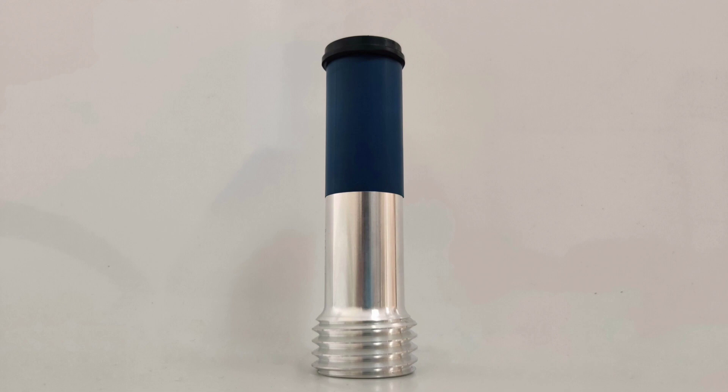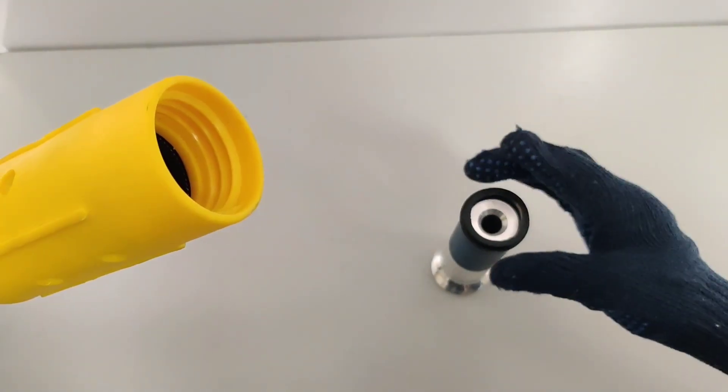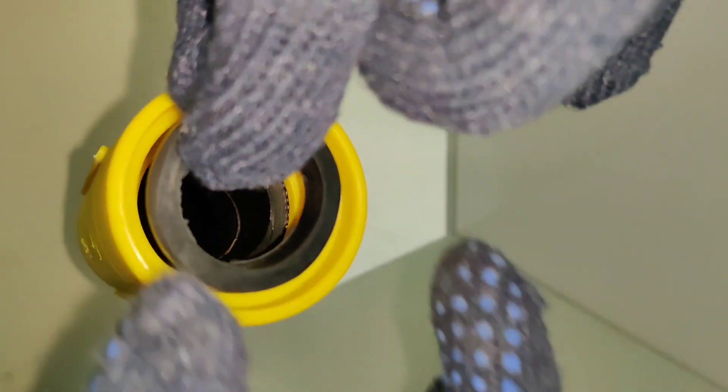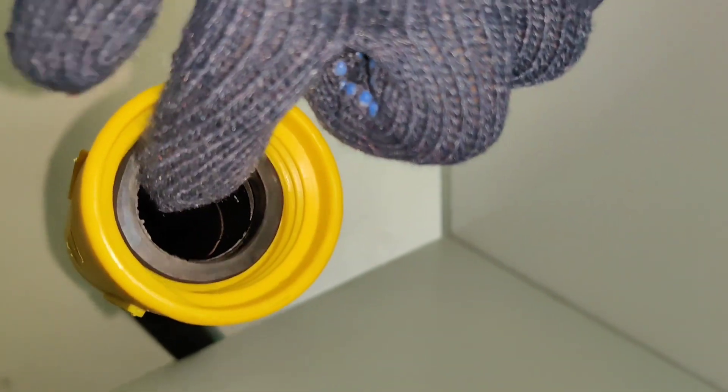Now we will connect the blast nozzle. With the nozzle there will be a washer known as nozzle holder washer. Insert the washer in the same way as shown in the video and make sure there is no gap between the blast hose and washer.